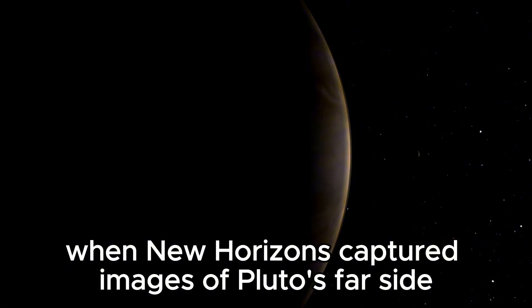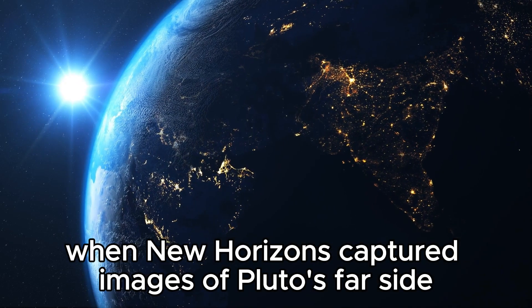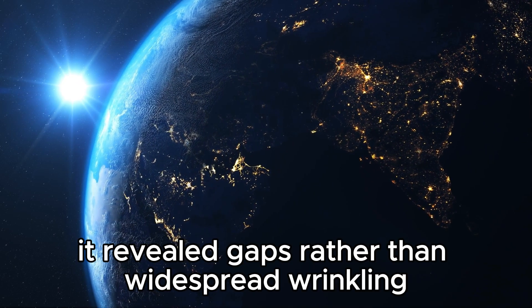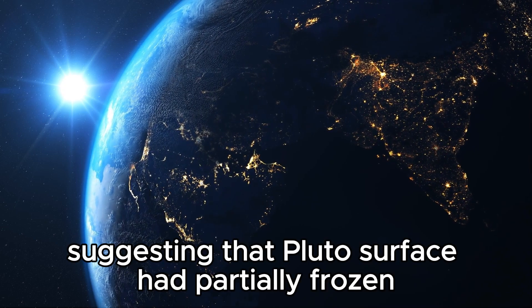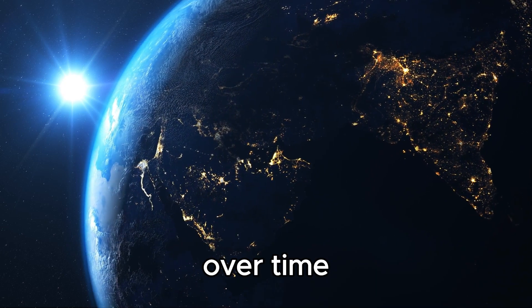However, when New Horizons captured images of Pluto's far side, it revealed gaps rather than widespread wrinkling, suggesting that Pluto's surface had partially frozen over time.